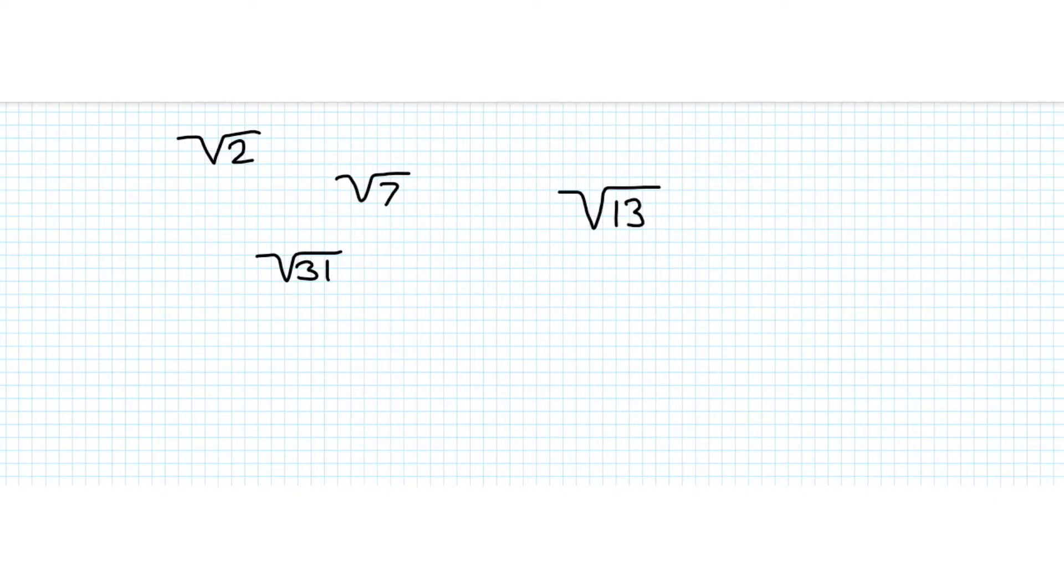The first thing we need to know when learning how to manipulate and deal with surds and simplify them is what actually a surd is. On the screen we've got some examples of surds. They're basically numbers where there's no way we can simplify or rearrange them to get rid of the square root or cube root or whatever nth root of the expression, so we can't write them without a root sign.